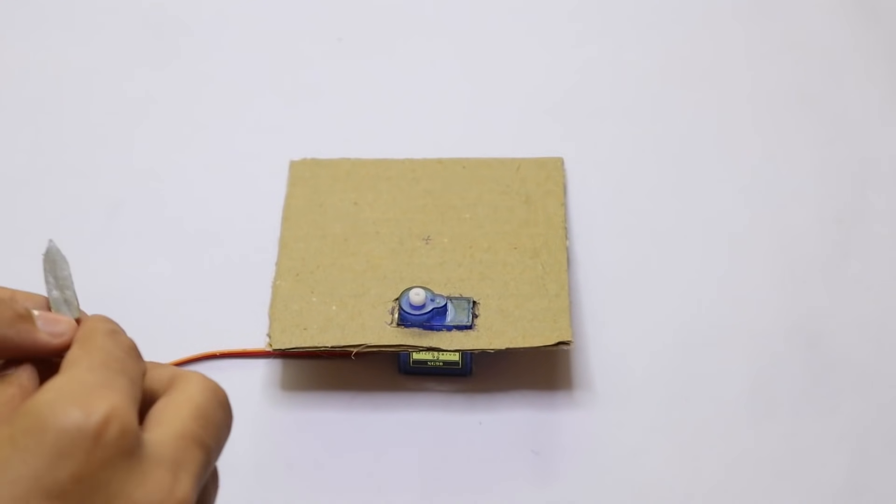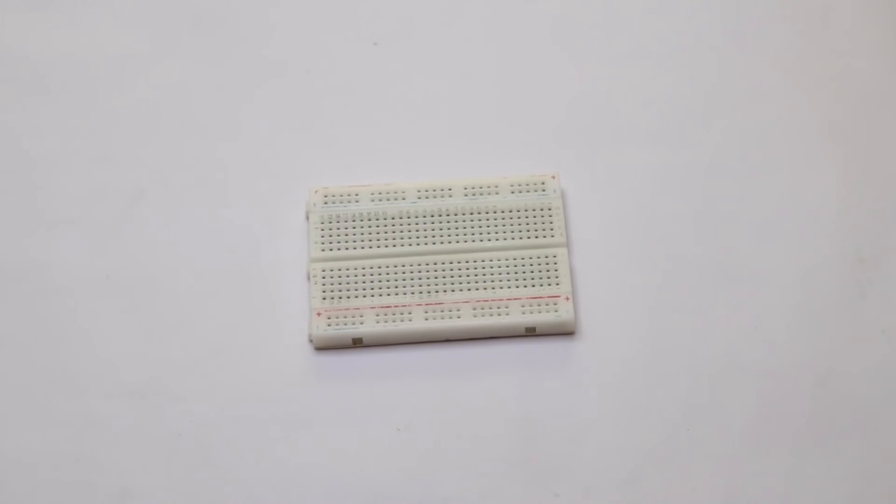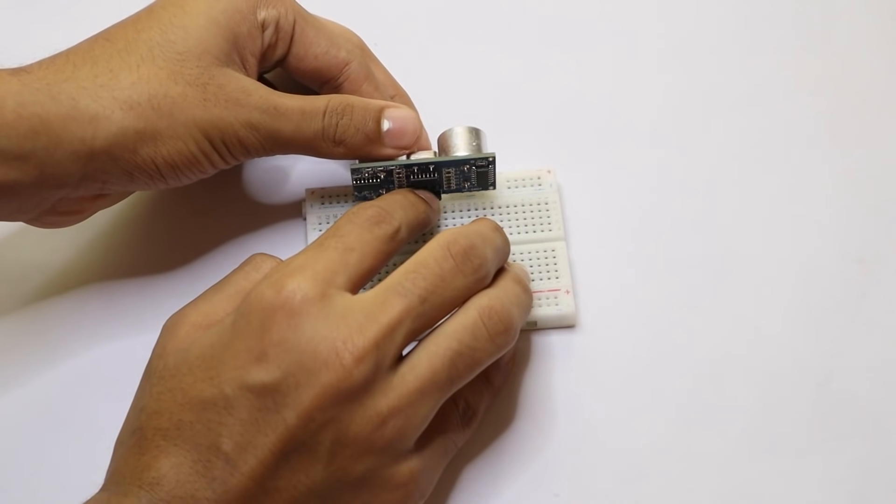Now just clip it right there like that. Now the next step is to take your breadboard and your ultrasonic sensor. Now connect the ultrasonic sensor to your breadboard like that.